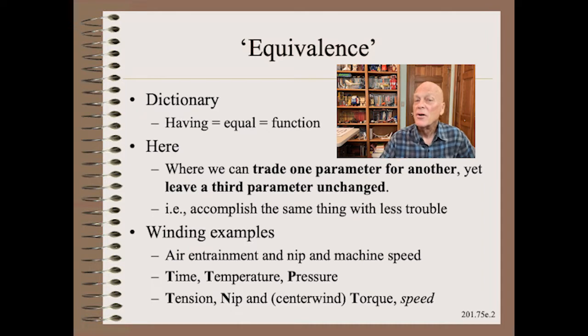The third is how we can use either winder tension or winder nip or winder torque or possibly winder speed to decrease any or all of the tight wound roll defects. Note that while these specific examples are taken from winding, the principles are far more general and thus extremely useful to the troubleshooter.